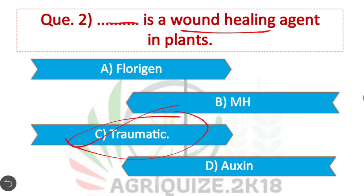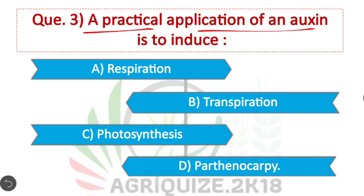Question 3: A practical application of auxin is to induce — Option D is correct. Auxin is used for inducing parthenocarpy in plants.